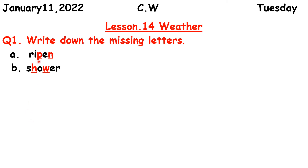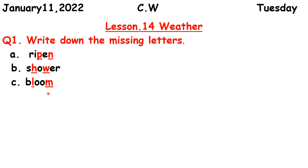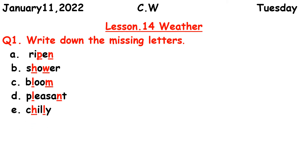Only underline the missing letters — do not write with a color pencil. In A, underline P and N. In B, underline H and W. C is 'bloom.' D is 'pleasant.' E is 'chilly.'